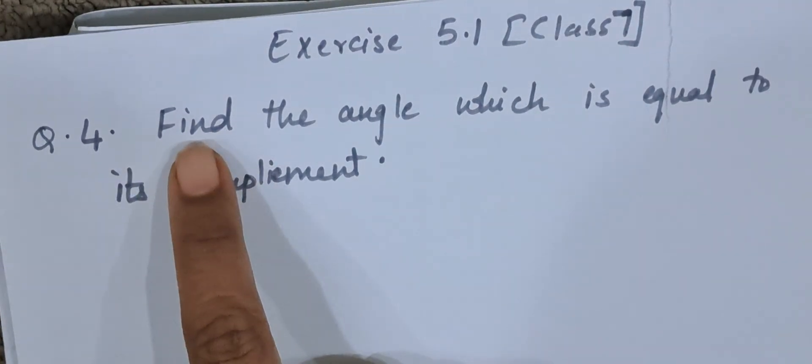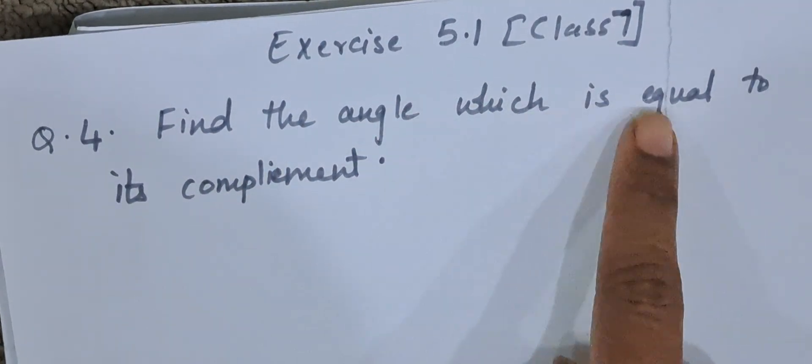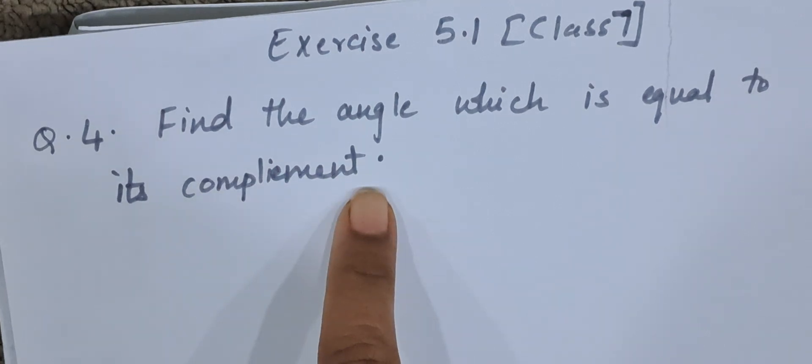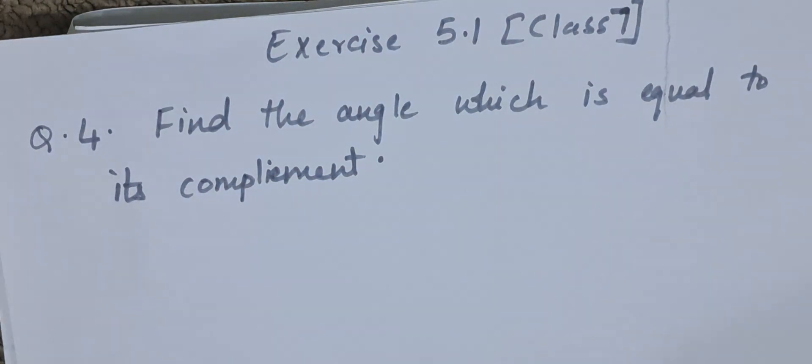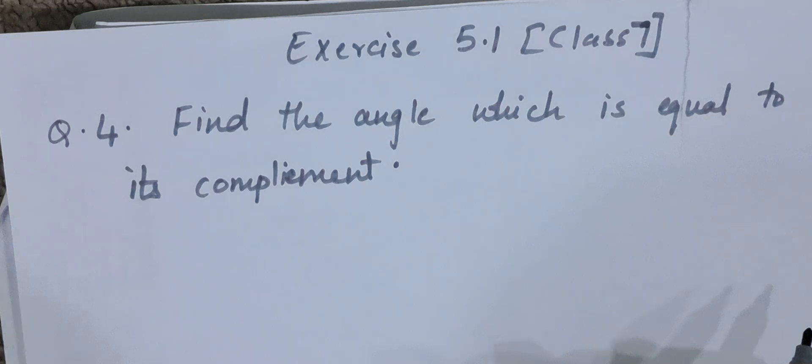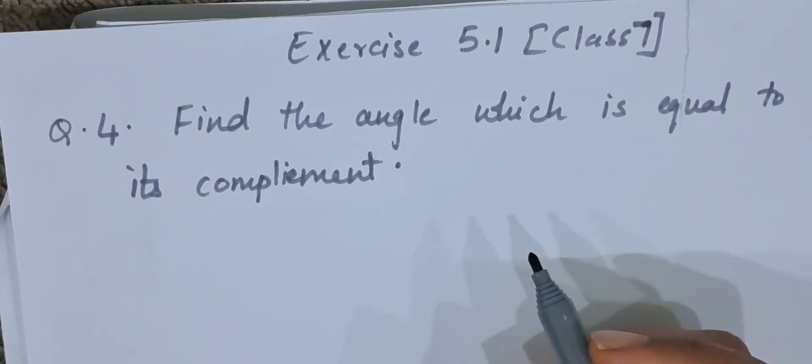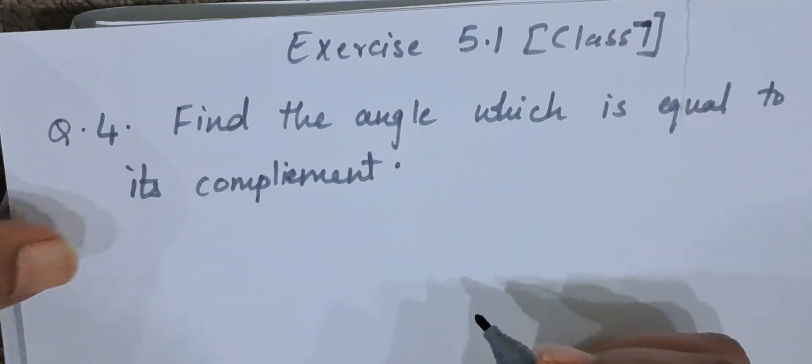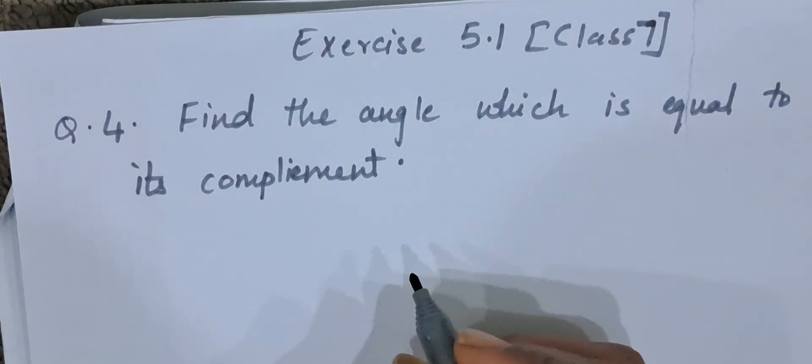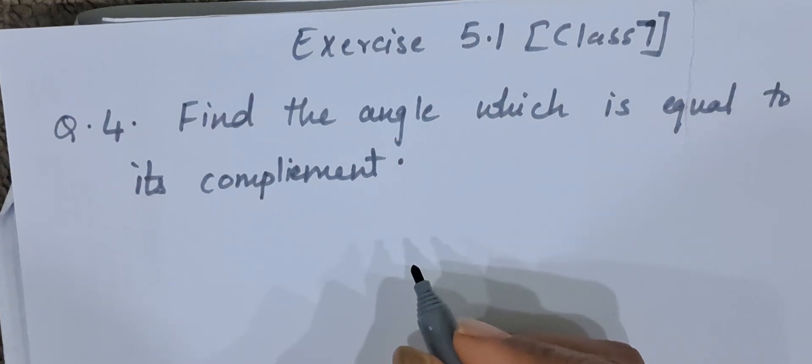Question number 4 goes like this: Find the angle which is equal to its complement. Here we all know that complementary angle means two angles when they are added together give the sum of 90 degrees. When two angles are added together we get their sum as 90 degrees. Those angles are called complementary angles.